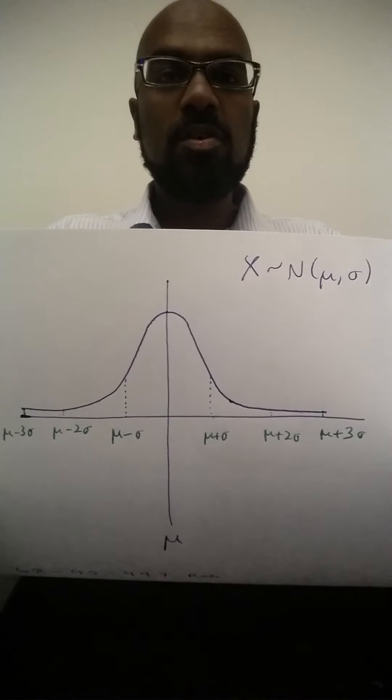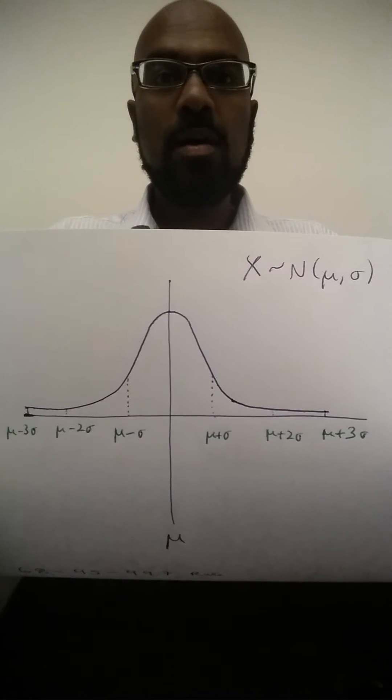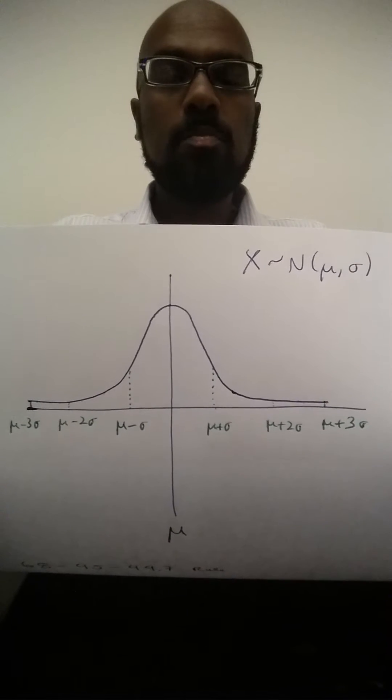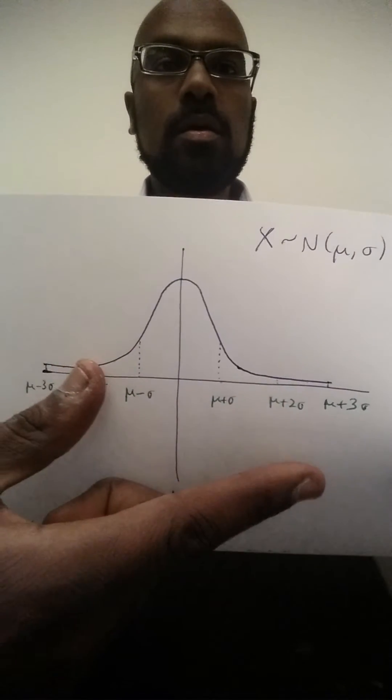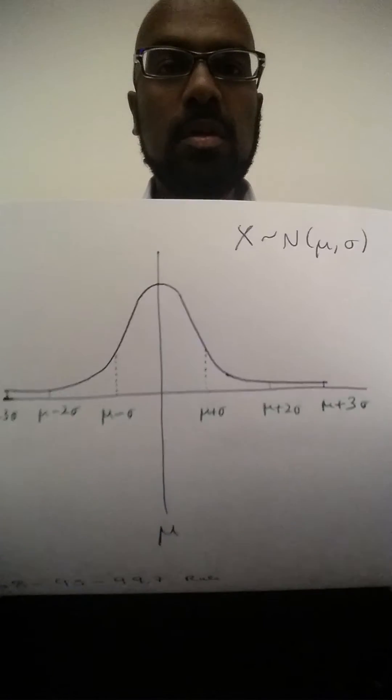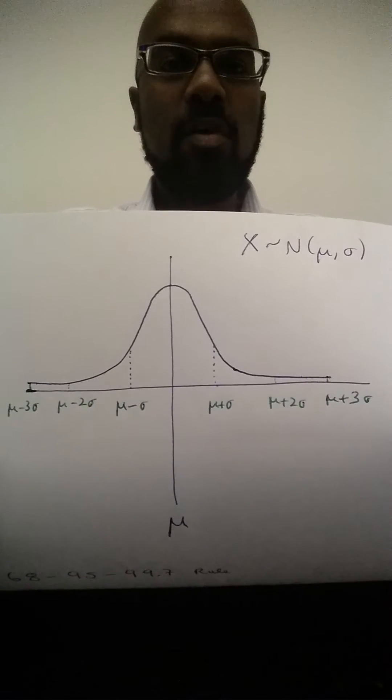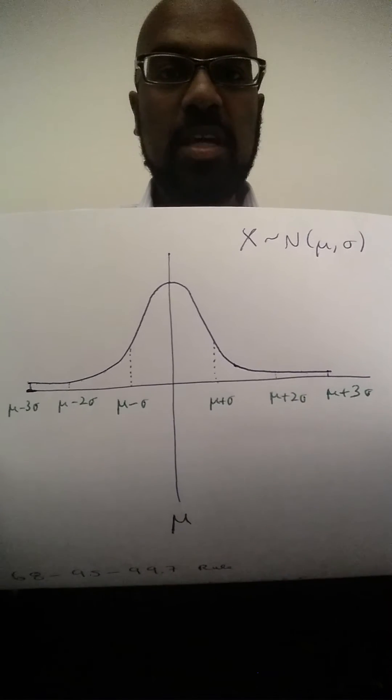Now one of the beauties of the normal distribution is there's a general rule of thumb for calculating probabilities in intervals around the mean for this distribution, and these intervals are based on how far off you are from the mean in terms of the standard deviation.